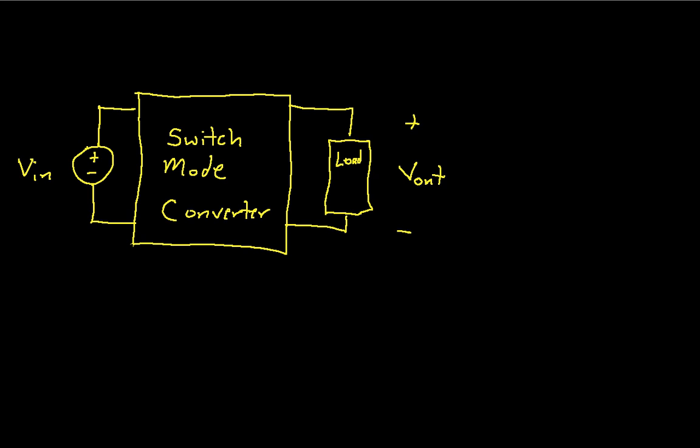The picture that we have here is sort of a generic picture of a voltage supply system. We have some voltage source VIN, and we have a switch mode converter which changes the input voltage VIN to some other voltage Vout. And typically, at least for a boost converter, we will have the situation that Vout is greater than VIN.